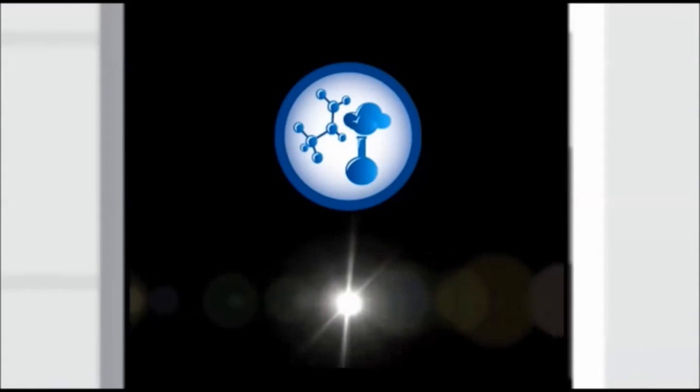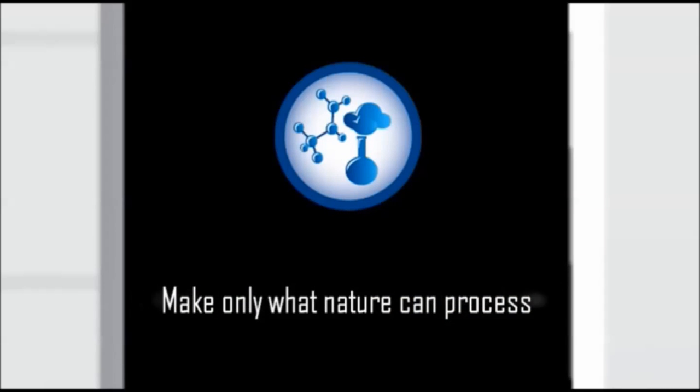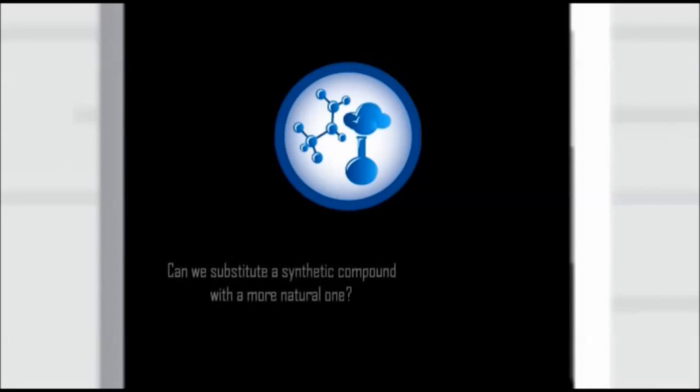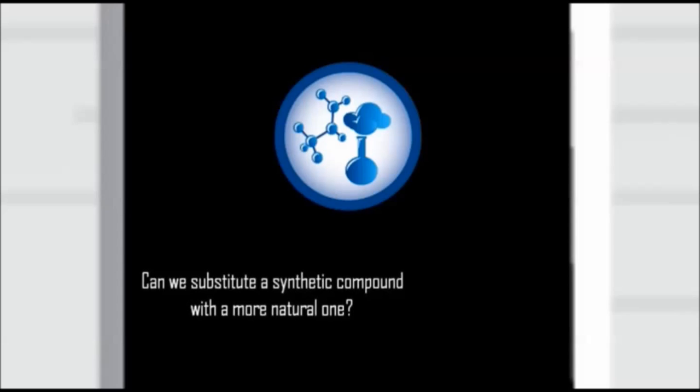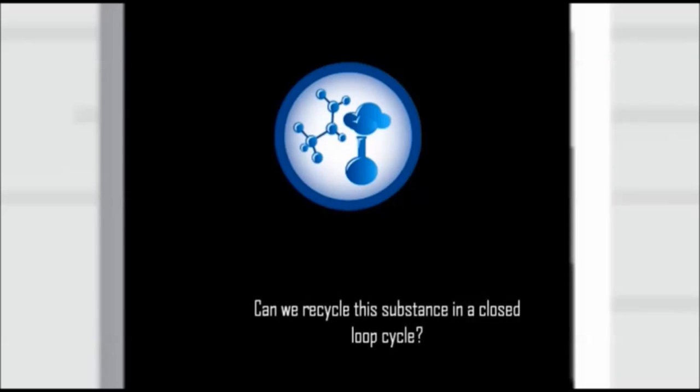The second sustainability condition means we should produce substances only at the rate that nature can process them. That includes reducing the production of plastics, pesticides, fire retardants, and carbon dioxide. Following this sustainability condition, we might ask: can we substitute a synthetic compound with a more natural one? And can we recycle this substance in a closed-loop cycle?